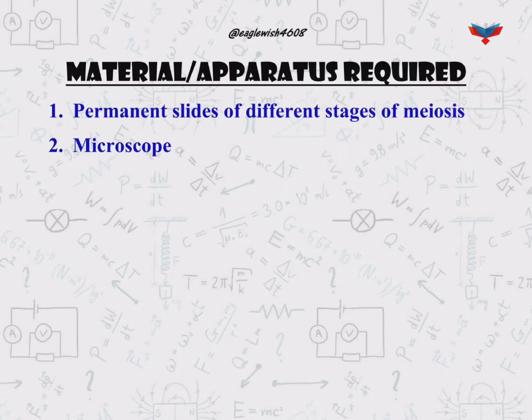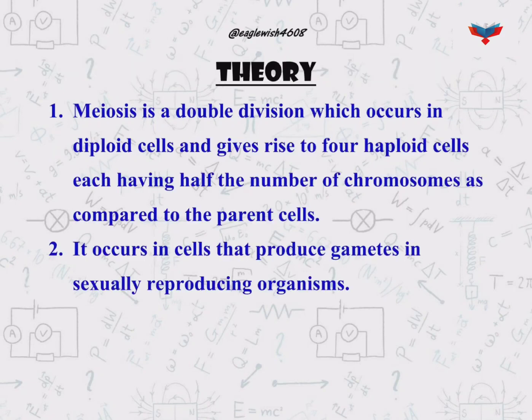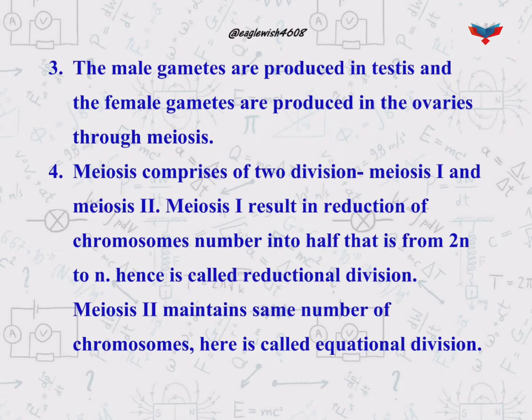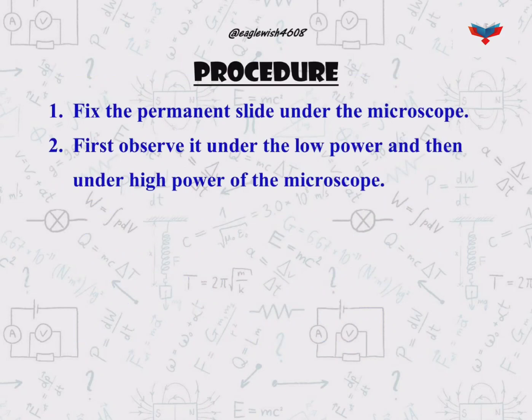The material required in this practical is the permanent slide of different stages of meiosis and a microscope. In theory, we will give a brief description about meiosis, such as meiosis is also known as reductional division. In procedure, we will write the steps to observe the slide under the microscope.